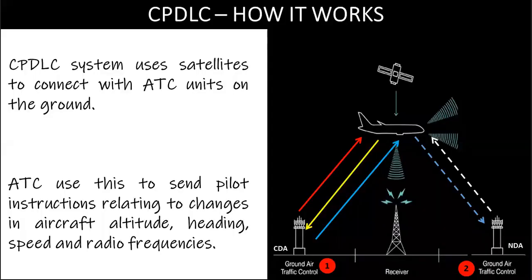CPDLC system uses satellite communications to connect with ATC units on the ground. The controller is provided with the capability to issue level assignments, crossing constraints, lateral deviations, route changes and clearances, speed assignments, radio frequency assignments, and various requests for information.